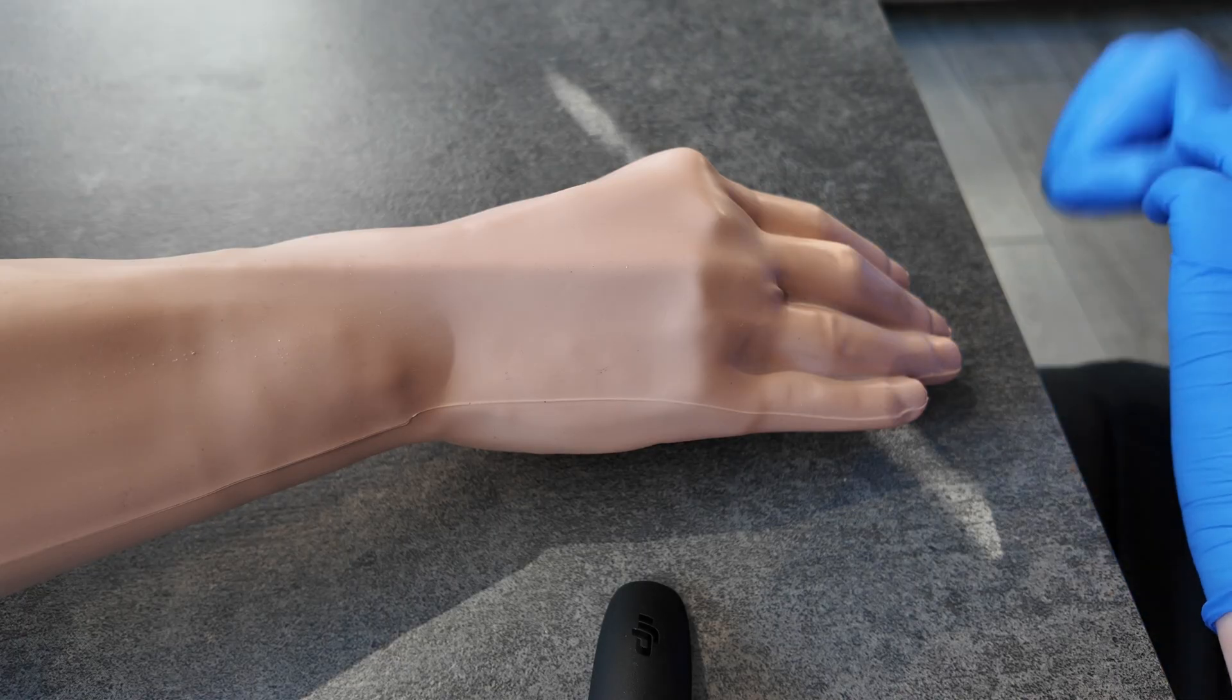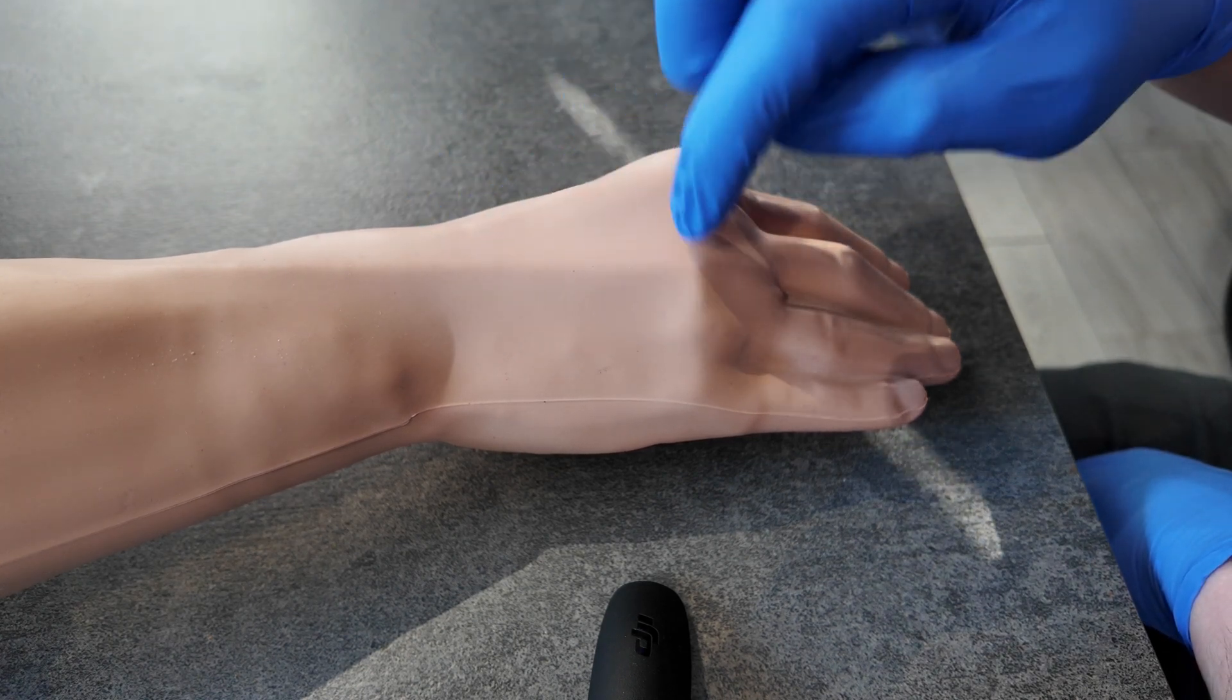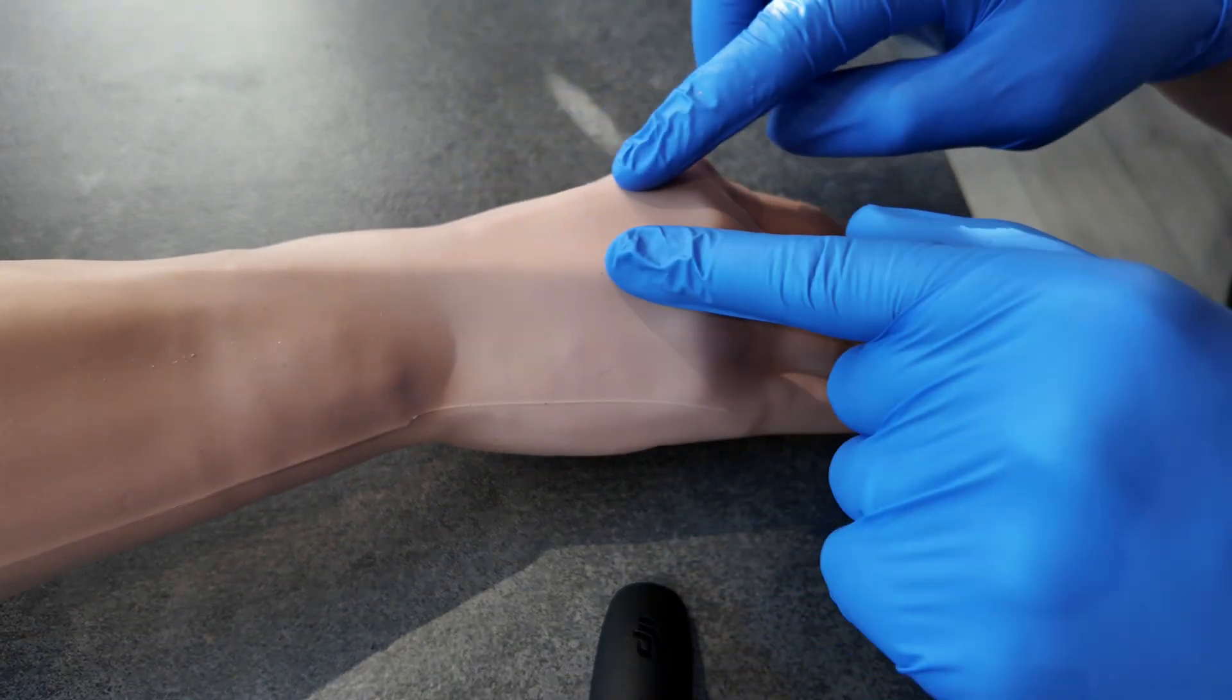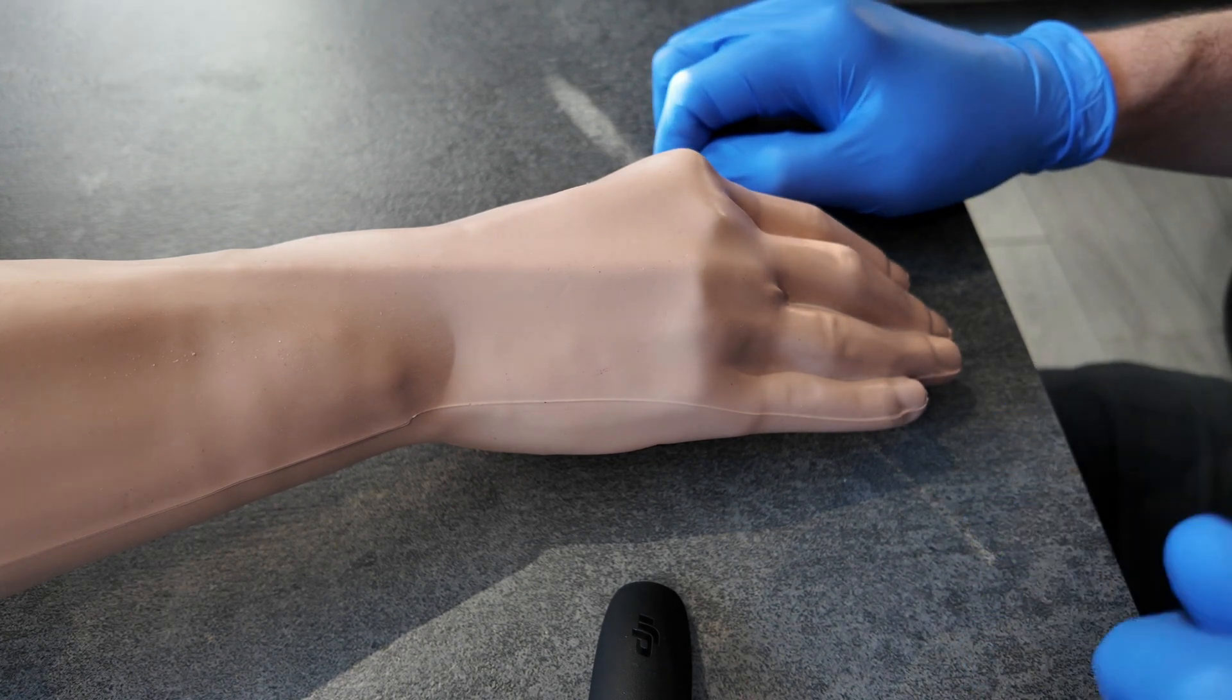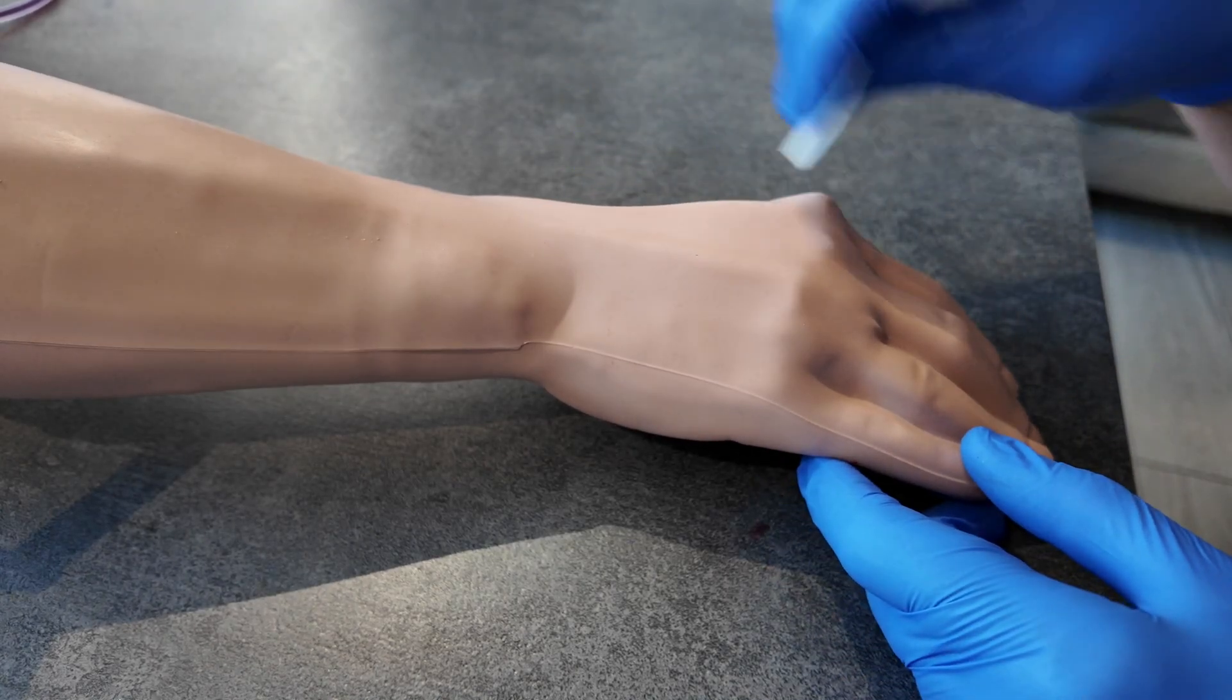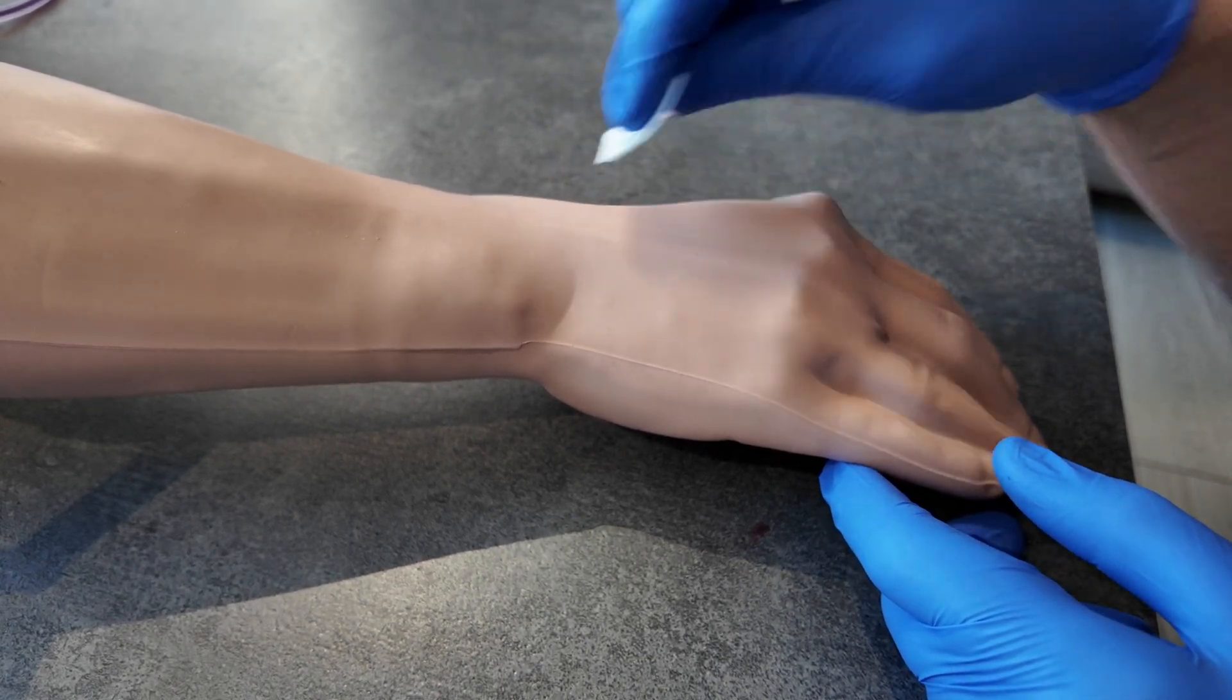Here we're looking at cannulating in the back of the hand, the dorsum of the hand. You have a dorsal venous network of veins. We clean the dorsum of the hand at our chosen cannulation site before we cannulate.